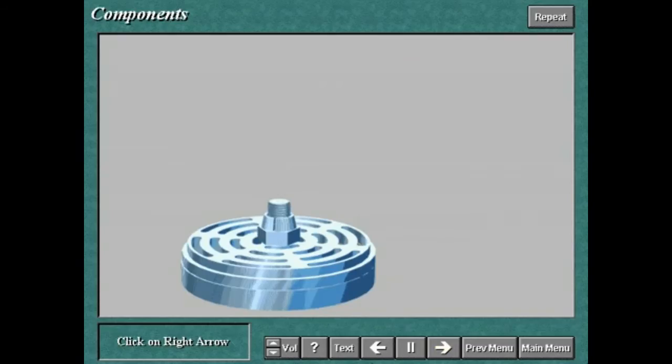All valves used on reciprocating compressors are made up of four basic elements: the valve seat, valve plate, springs, and valve stop.